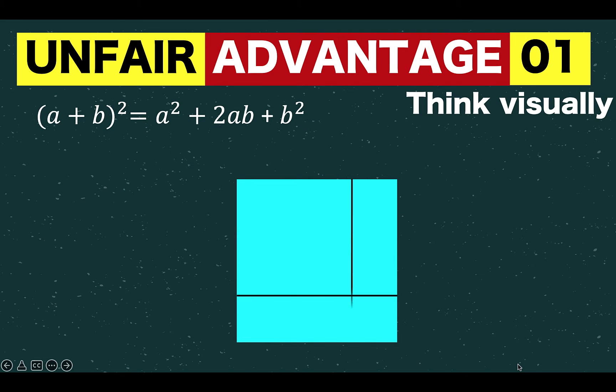You have a square, the side length of the square is a plus b, and the square is broken down into four parts. You have this pink square, the area of that is a squared, then you have the smaller yellow square with an area of b squared, and you have two rectangles, each with an area of a times b.